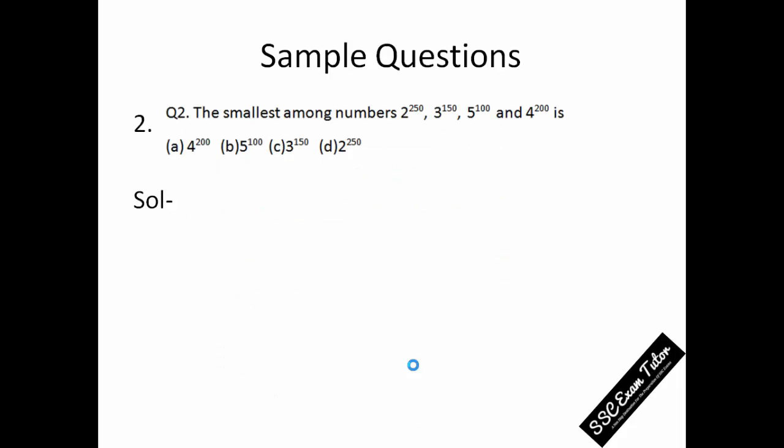Now one more example to clarify your concept. I will use the same method. Here we also have very big powers: 2 to the power 250, 3 to the power 150, 5 to the power 100, and 4 to the power 200. In this question we are asked to find the smallest number, so what you need to do is find the HCF of the powers. The HCF of 250, 150, 100, and 200 is 50.